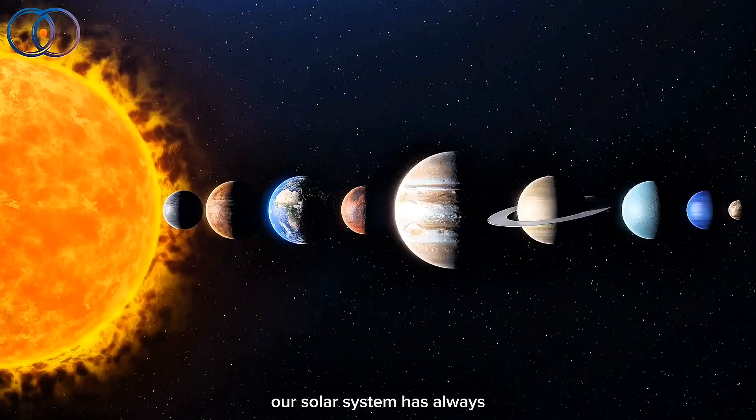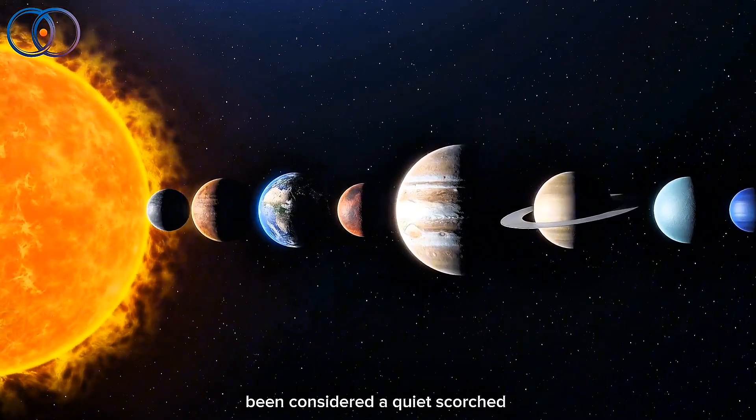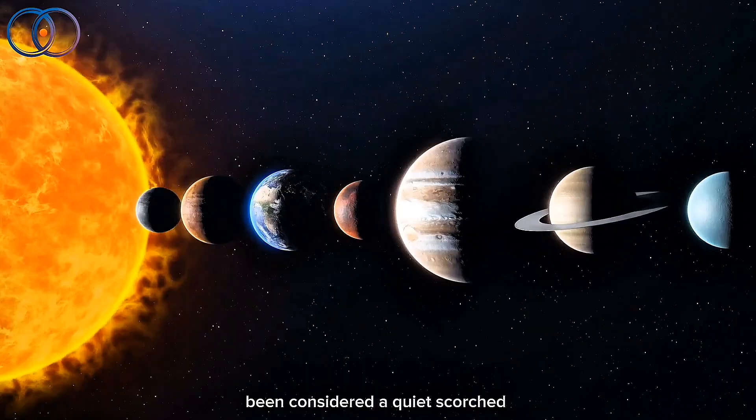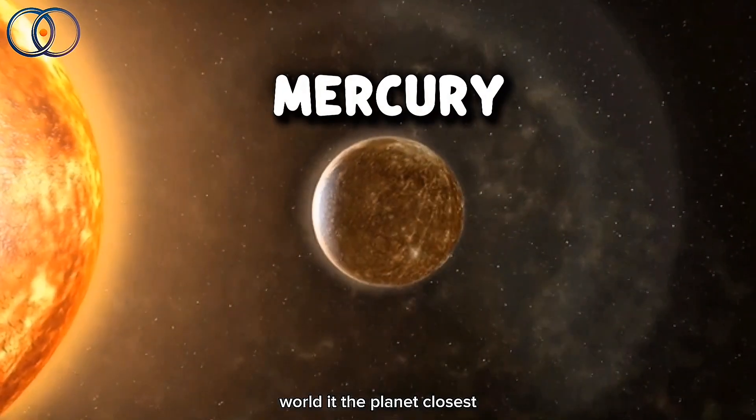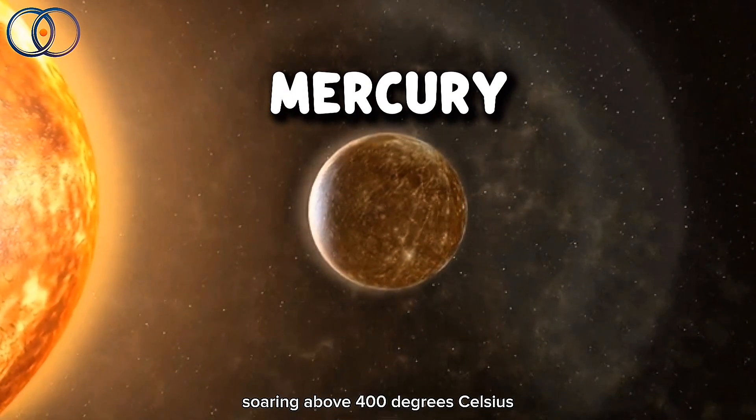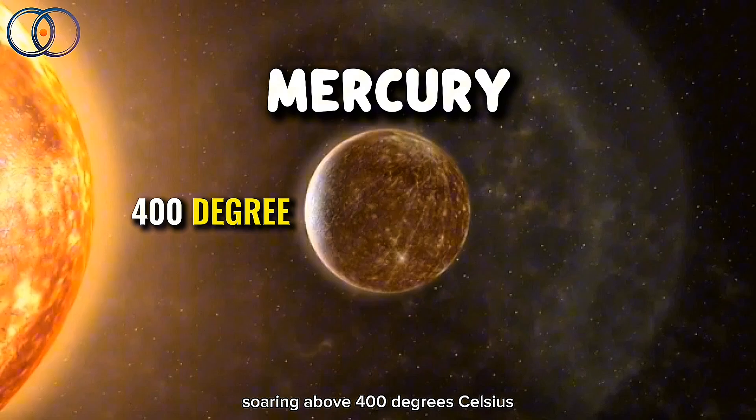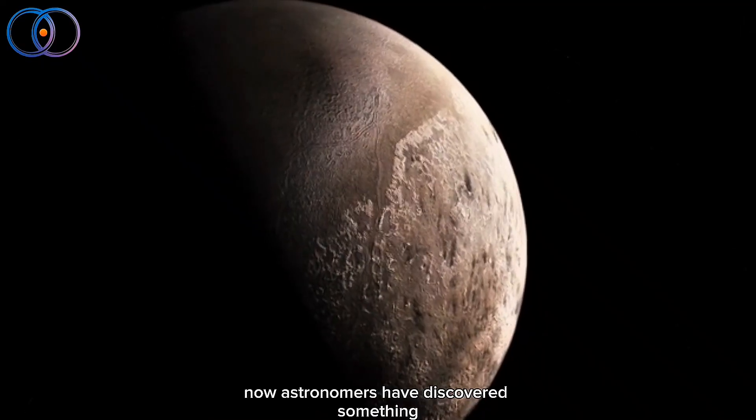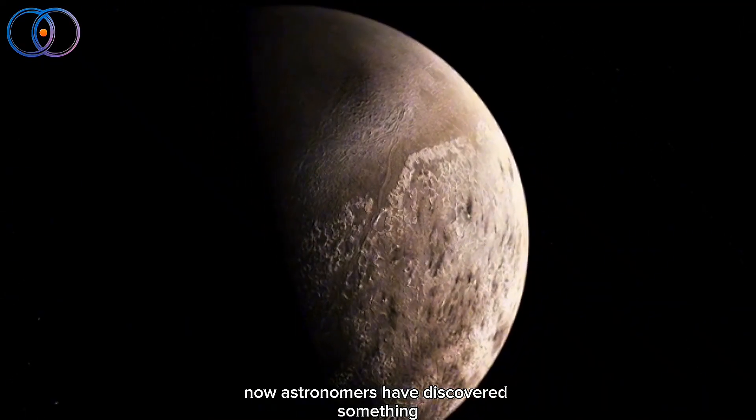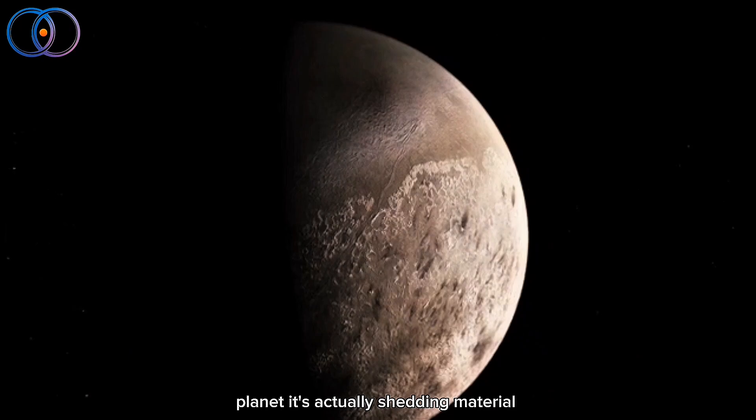Mercury, the smallest planet in our solar system, has always been considered a quiet, scorched world. It's the planet closest to the sun, with temperatures soaring above 400 degrees Celsius on its day side. But now, astronomers have discovered something truly remarkable about this tiny planet.